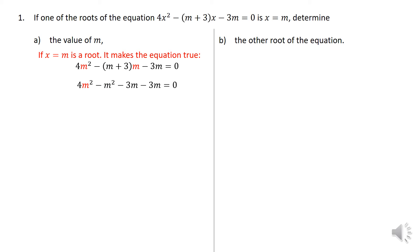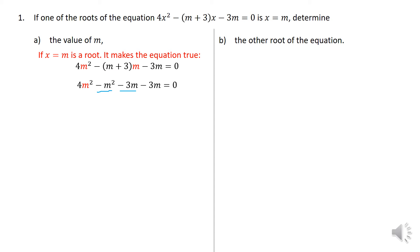Maybe you can look at this as minus m and then multiply through. It's very easy to make a little mistake here. When you do the calculation, you realize that gives you minus m², and that negative times 3 gives you negative 3m. It's very important that you do not make algebraic or basic errors when expanding. If you clean that up, you get 3m² minus 6m equals 0.